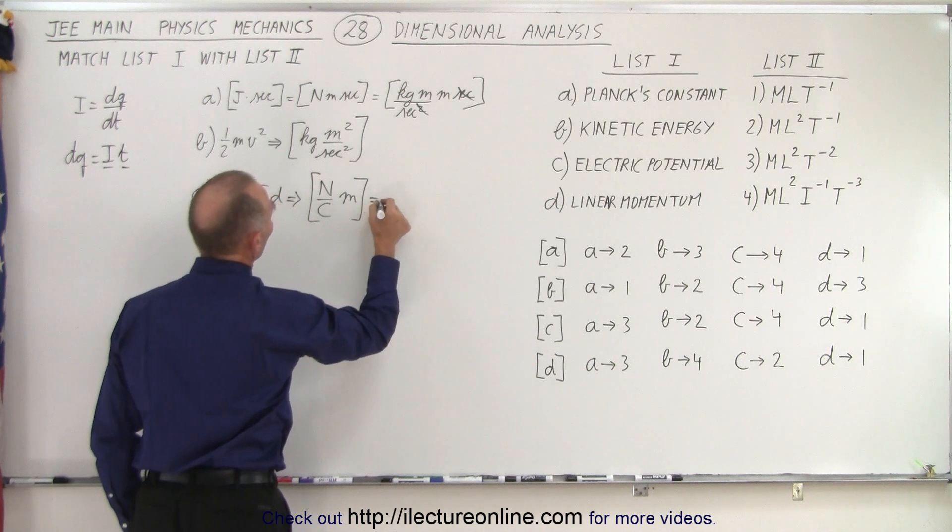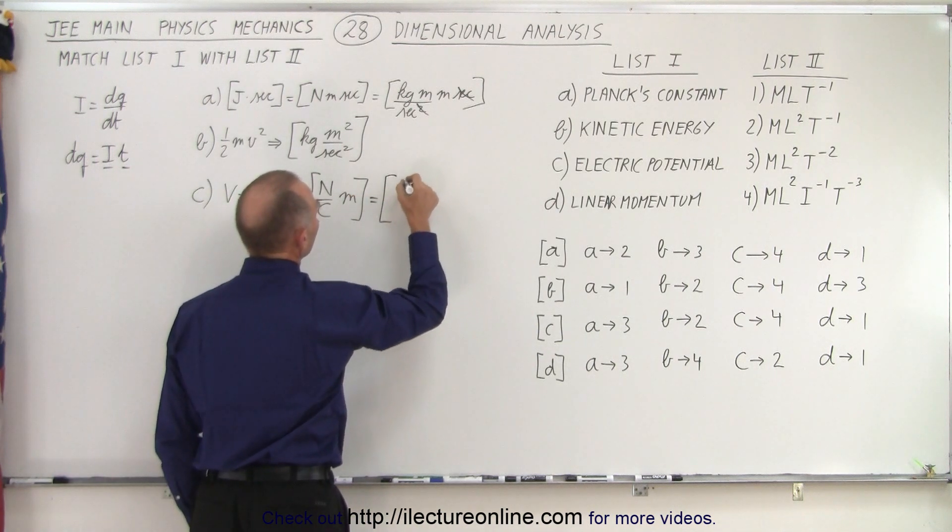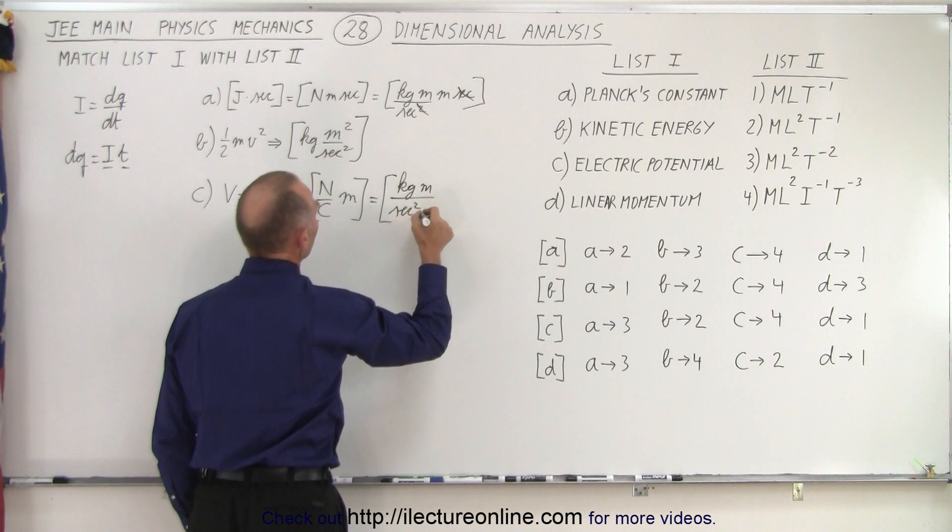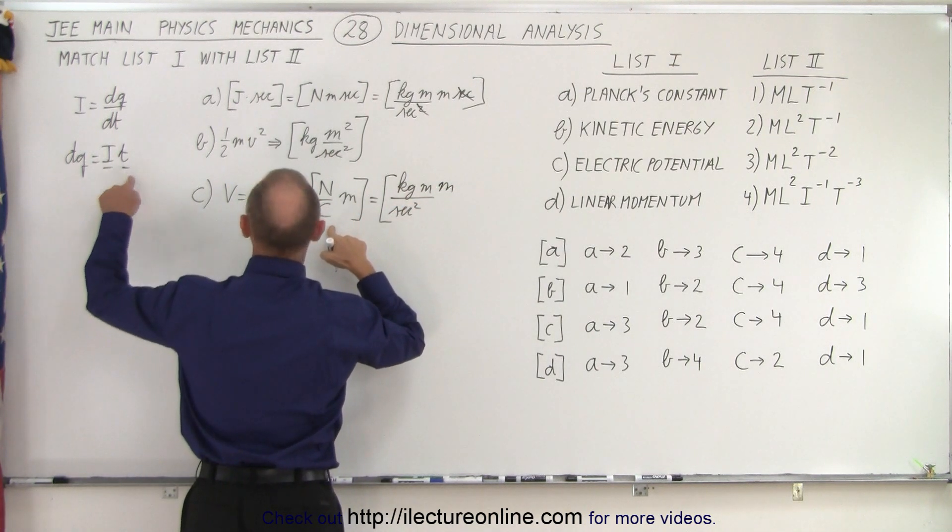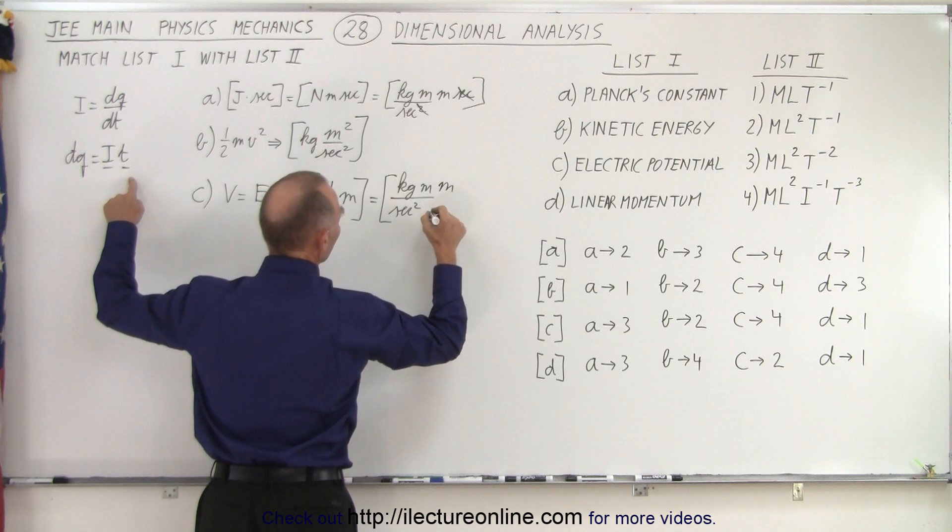So then this becomes a newton, which is a kilogram meter per second squared times a meter. Coulomb is now going to be current times time, so it would be current or amps times time which is seconds.